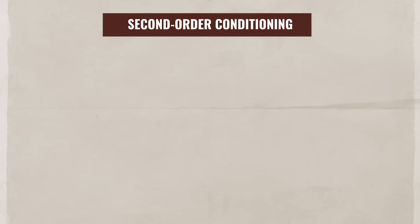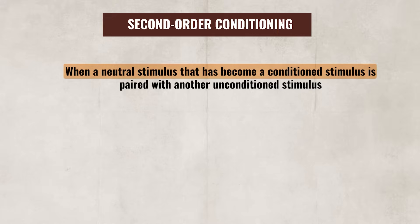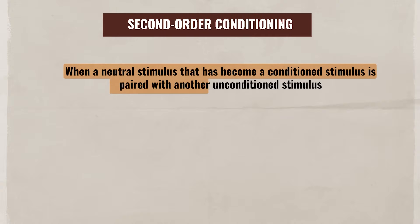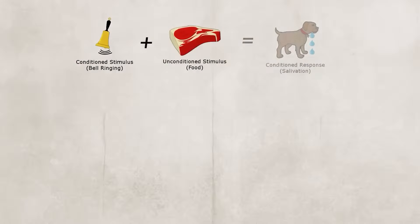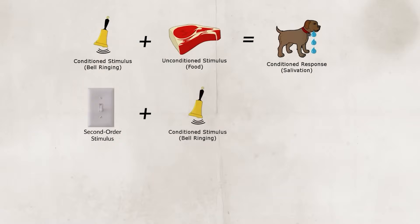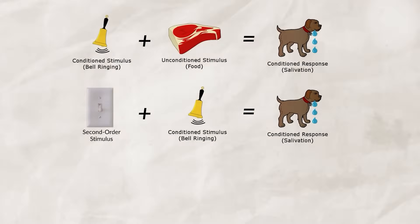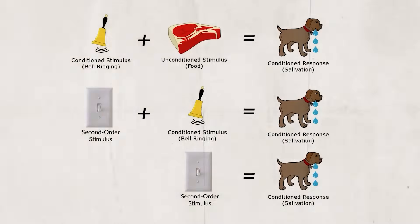One other concept we need to talk about is higher order conditioning, also known as second order conditioning. It is when a neutral stimulus that has become a conditioned stimulus is paired with another unconditioned stimulus. For example, say that we have a dog that is conditioned to salivate to the sound of a bell. We could turn on a light right before we ring the bell and then give the dog food. If we continue to repeat this process, eventually the dog would associate the light with the food and would salivate at the light alone, even though the light was never directly paired with the food.